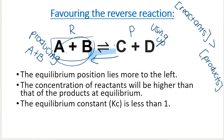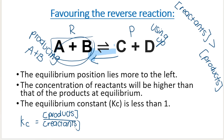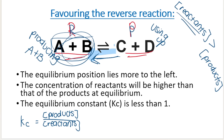That means the equilibrium position lies more to the left. Kc is always concentration of products over concentration of reactants. People sometimes get confused and think that products and reactants switch depending on which reaction — forward or reverse — you're talking about. But the left-hand side is always considered the reactants and the right-hand side is always considered the products. If the reverse reaction is favored, we make more reactants, so the denominator of the fraction will be bigger. And as you know in math, the bigger we make the bottom of the fraction, the smaller Kc will be — the equilibrium constant is generally less than one.